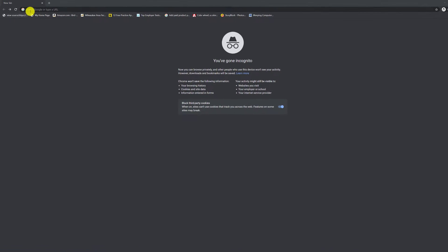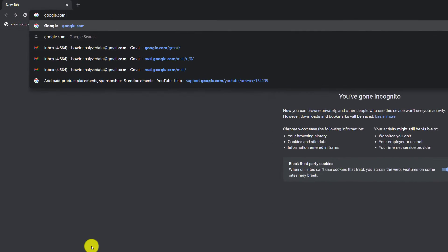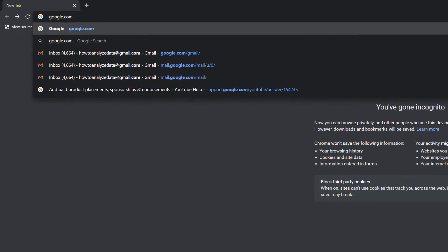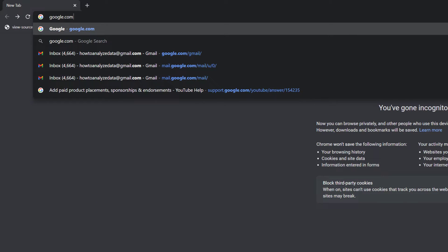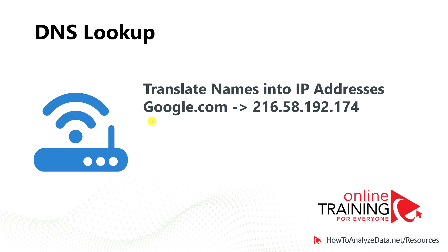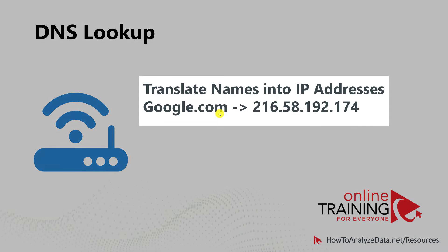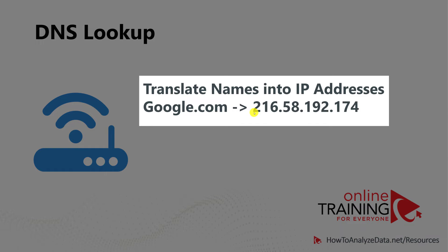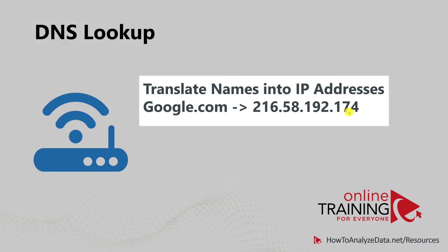If you type google.com in your internet browser, your computer doesn't know what google.com is and it asks a DNS server to do the lookup. DNS makes it possible for us to type google.com and instead get connected to IP address 216.58.192.174.